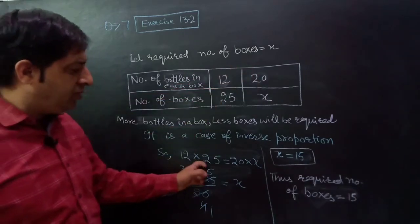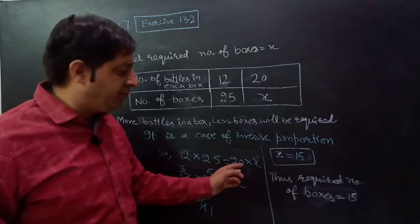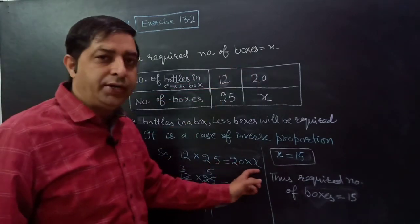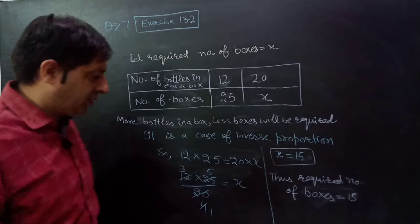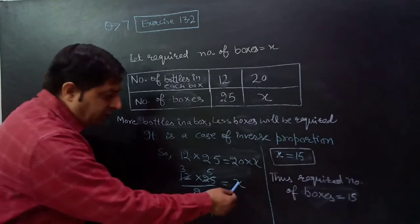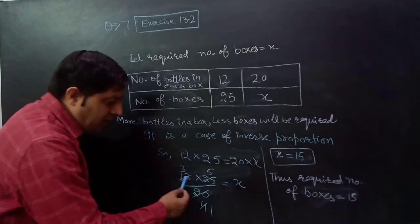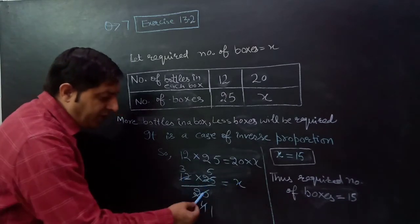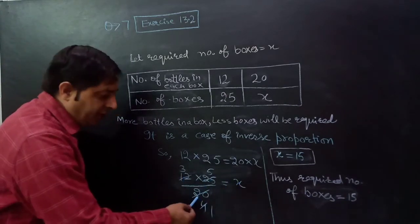If it is a case of inverse proportion, their product remains same. So 12 into 25 must be equals to 20 into x. Therefore x is equals to 12 into 25 upon 20.